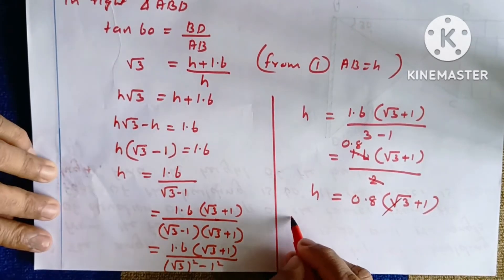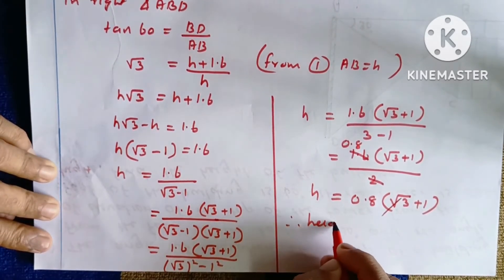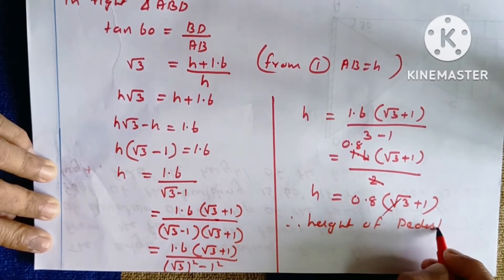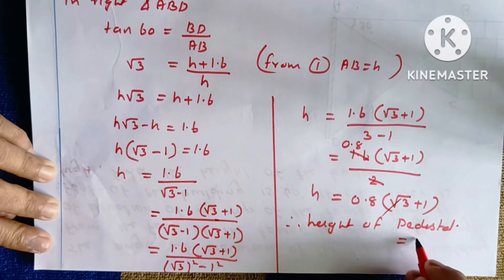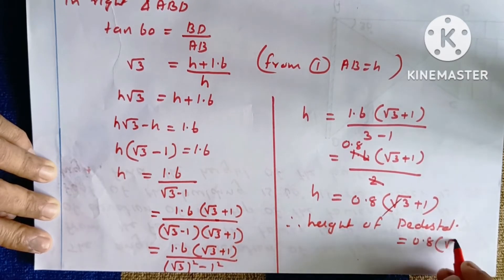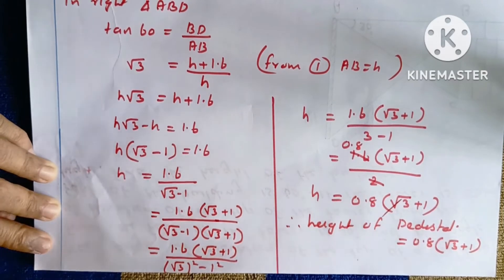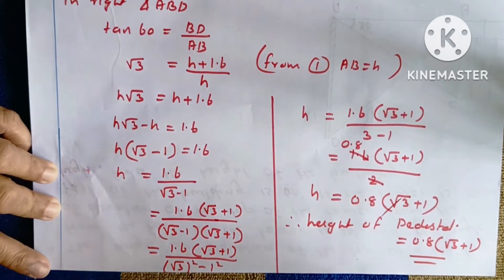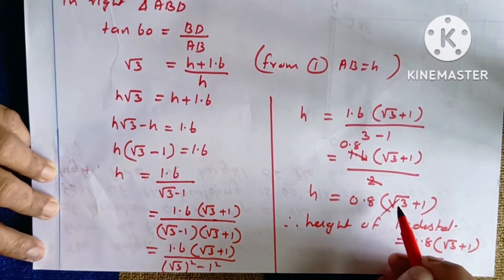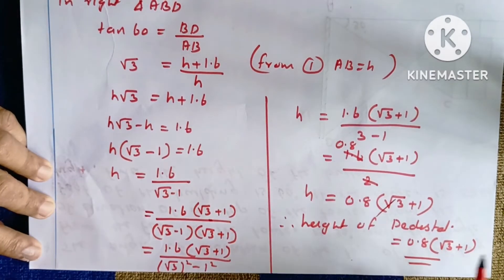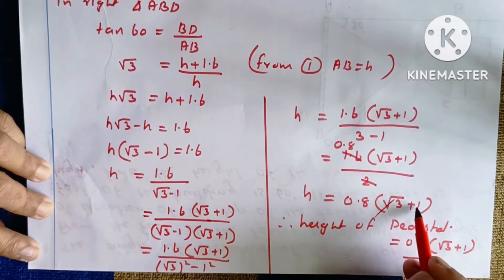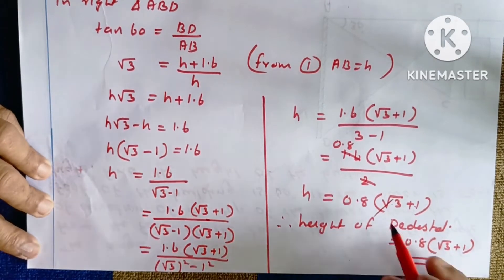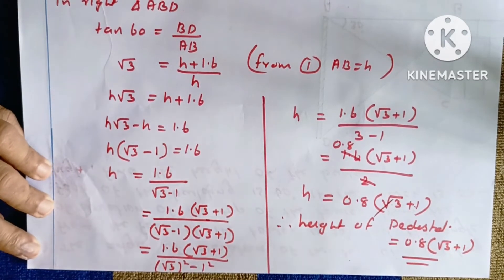Therefore, the height of the pedestal is equal to 0.8(√3 + 1). This is the value of h.